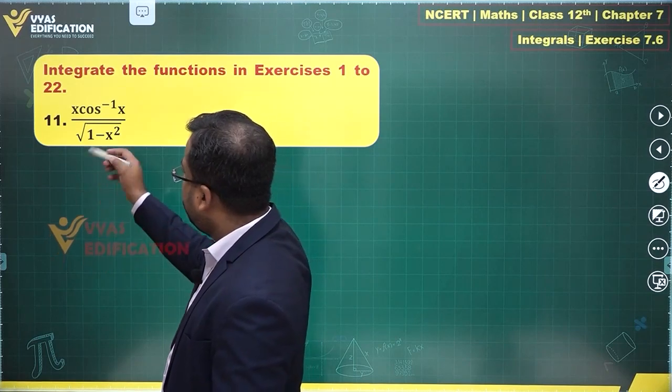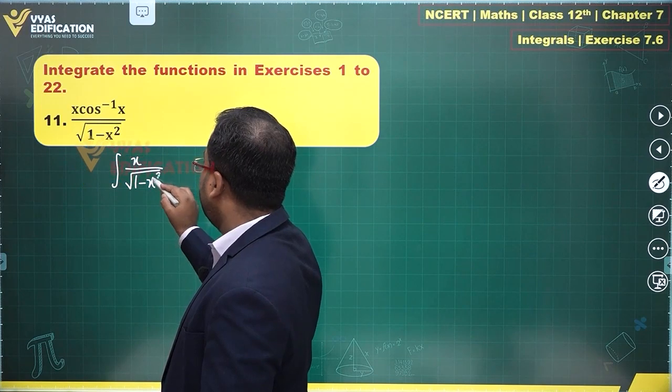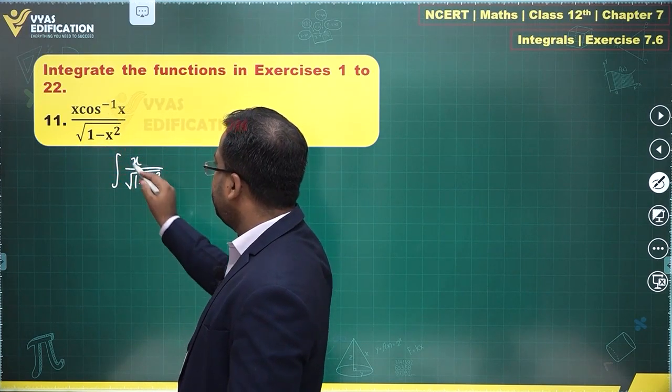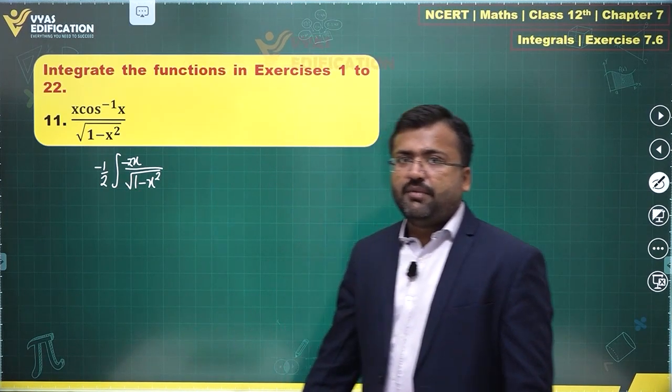So let us take a look at integral of x upon root 1 minus x square. You need the derivative of this, which is minus 2x. So you multiply with minus 2 and you divide with minus 2.